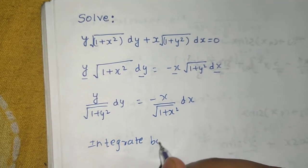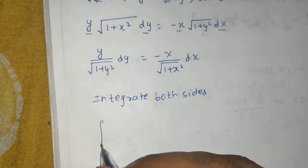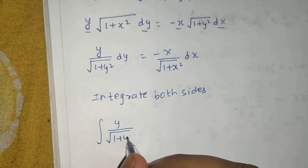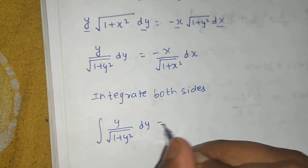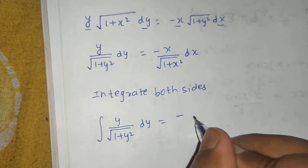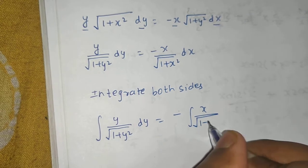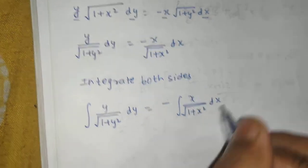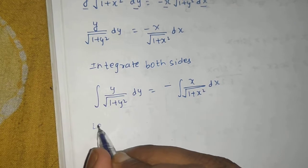Integrating both sides: the integral of y divided by √(1+y²) dy equals minus the integral of x divided by √(1+x²) dx. For the left-hand integral, we use a substitution.